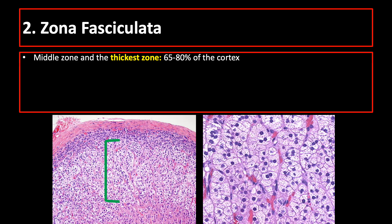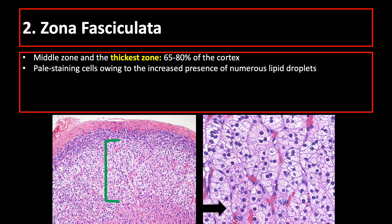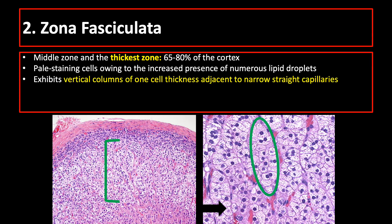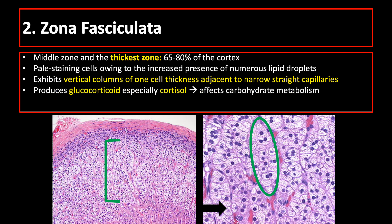The middle zone is the zona fasciculata. It is the thickest zone, occupying 65–80% of the cortex. This zone is characterized by pale staining cells owing to the increased presence of numerous lipid droplets, and the cells are arranged in vertical columns of one cell thickness adjacent to straight capillaries. The cells of this zone produce the glucocorticoid cortisol, which affects carbohydrate metabolism.